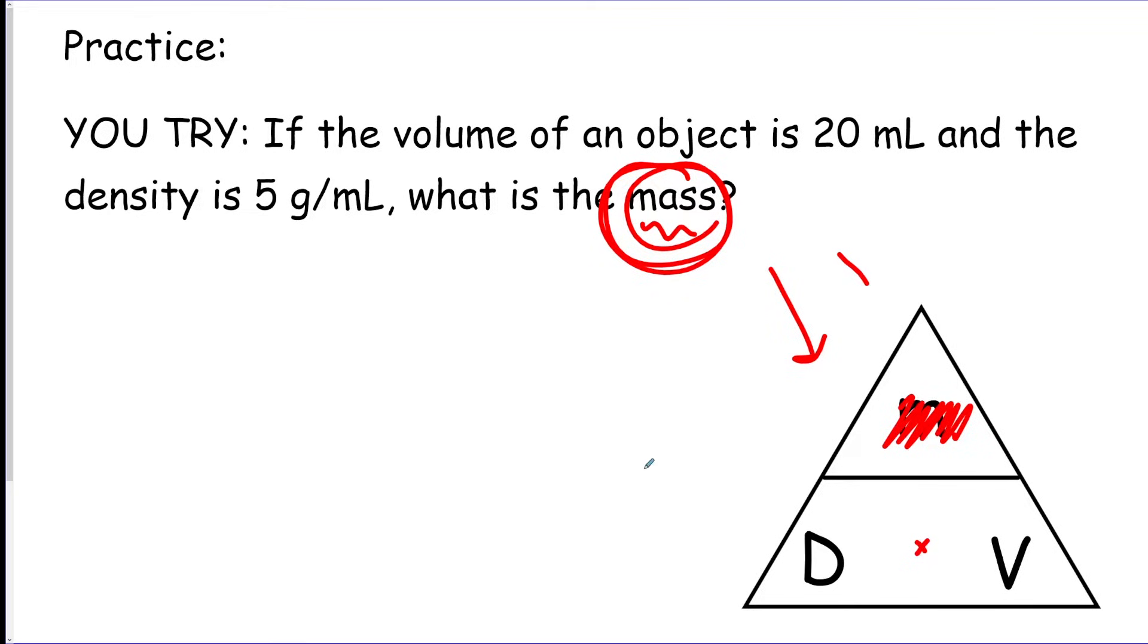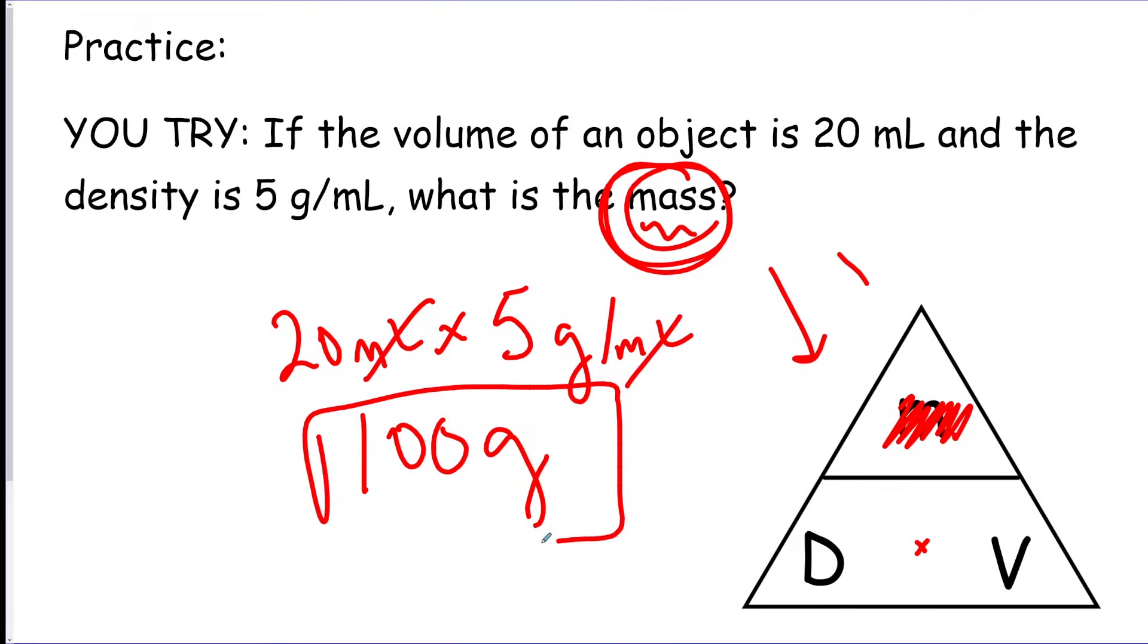So you could do 20 milliliters times 5 grams per milliliter, and you would get 100. The milliliters cancel—grams for your final answer. So you can use the triangle on the right to get all the formulas.